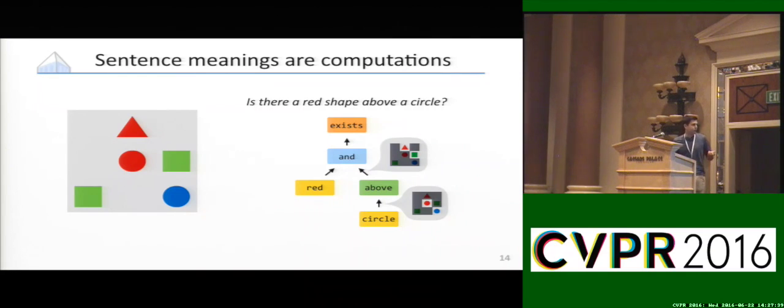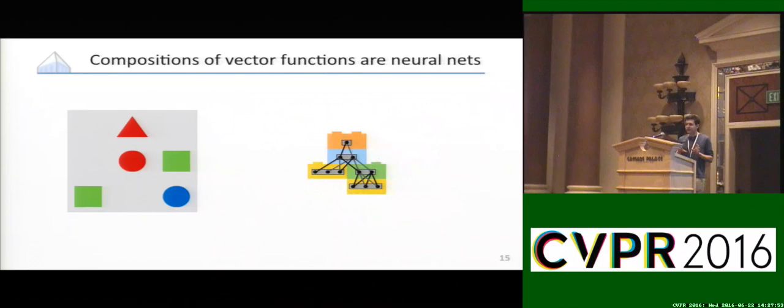More generally, what do we have here? We have a function from images through a bunch of intermediate vector values that we can interpret as attentions to some kind of distribution over answers. A function from vectors through vectors to vectors is just a neural net. So once we've said we're going to have question-specific computations, what we're really saying is we're going to have question-specific neural networks, and we're going to build those neural nets out of pieces in some way.